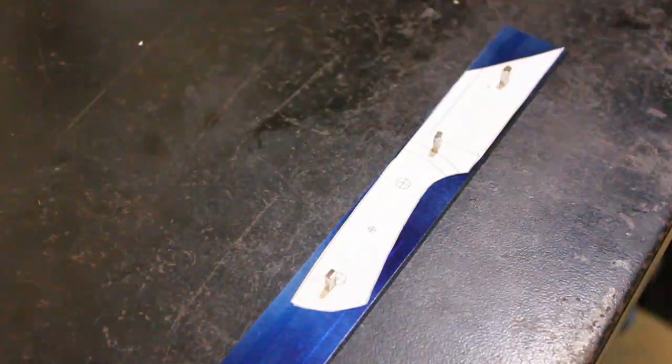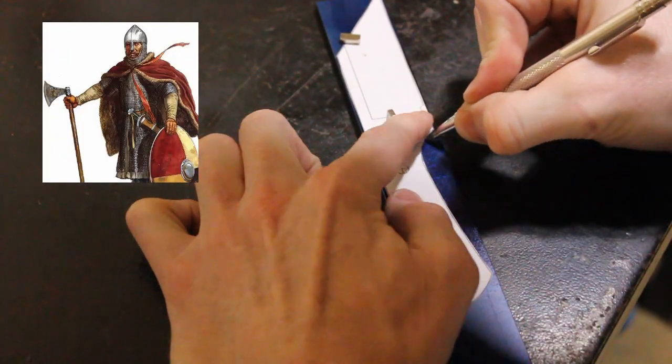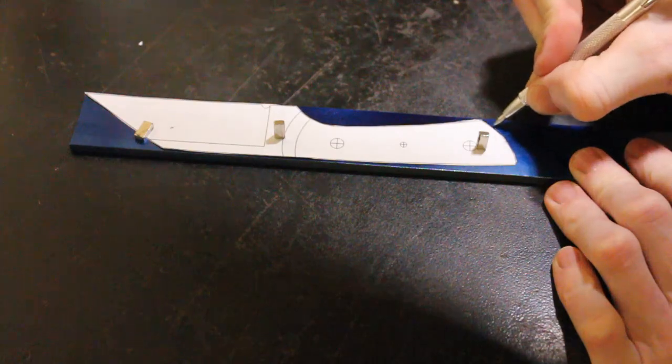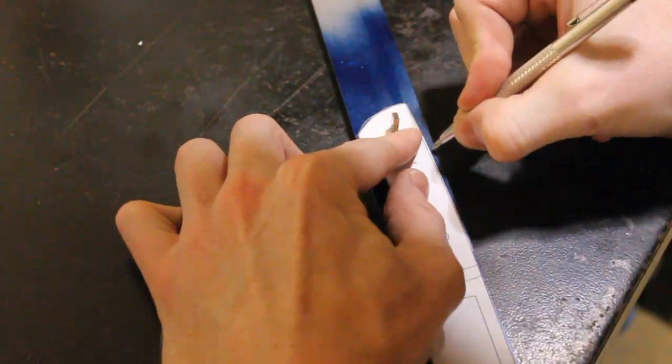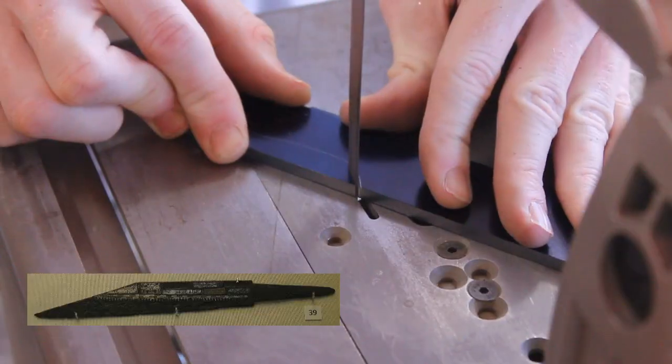I found out recently that I have a lot of Anglo-Saxon blood coursing through my veins via an ancestry test. So today we're going to be making a very common knife that was carried by the Anglo-Saxons, the sax.